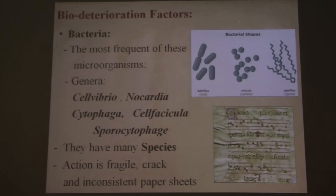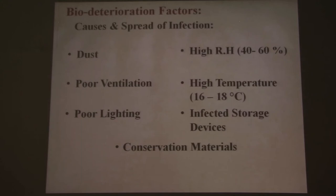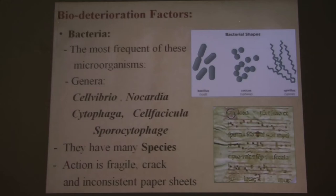The third element is bacteria. Five genera are the most well-known that cause damage to paper, which mainly manifests as fragility and cracking in the document itself.